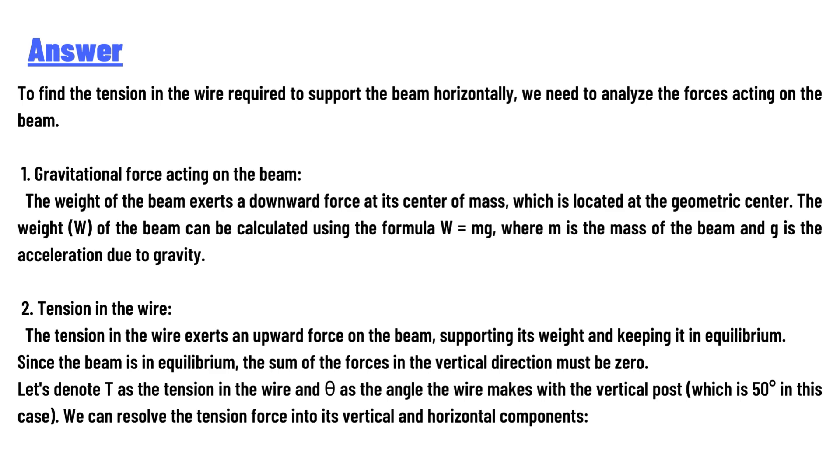The tension in the wire exerts an upward force on the beam, supporting its weight and keeping it in equilibrium. Since the beam is in equilibrium, the sum of the forces in the vertical direction must be zero. Let's denote T as the tension in the wire and θ as the angle the wire makes with the vertical post, which is 50 degrees in this case.